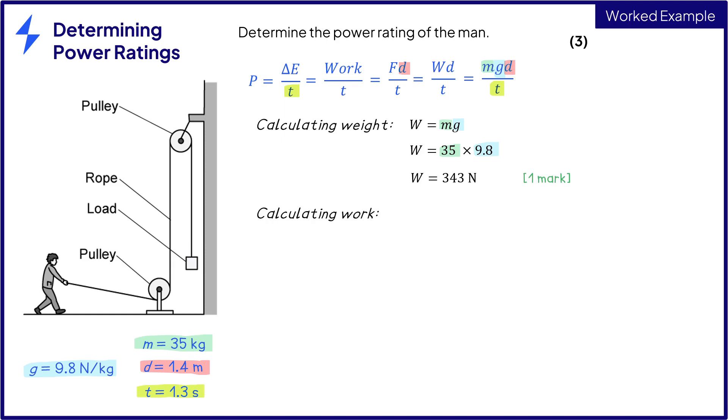Next we calculate the work done which is force times distance or in this case weight times distance. Notice how I've used the word work here in the equation to make it clear where I'm referring to work and where I'm referring to weight because they both have the symbol W. Anything that makes your calculation clearer is great.